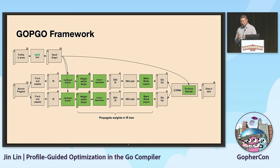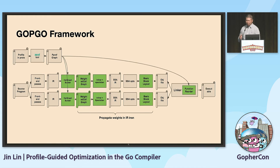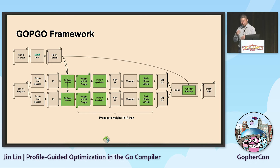When the AST IR is translated into the SSA IR, we annotate the profile information onto basic blocks. Every operation on the SSA IR also needs to maintain this profile information. We then perform basic block reordering based on this profile. Later, in the linker step, we read the pprof file again and do function reordering across packages.